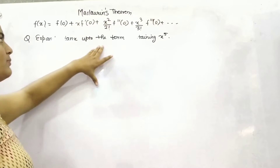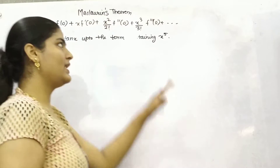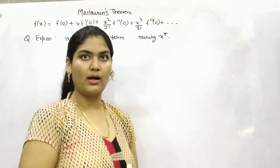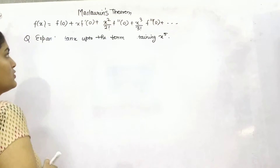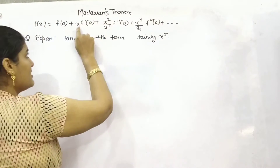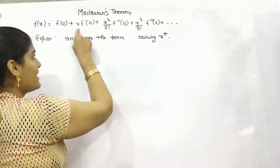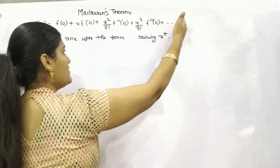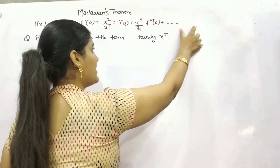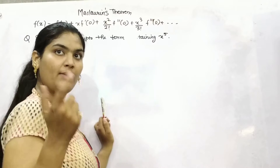Let's see how we can expand using this formula. Expand tan(x) up to the term containing x raised to the power 5. So we have to expand until x raised to the power 5.